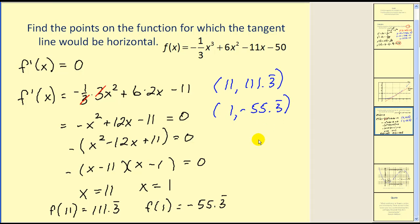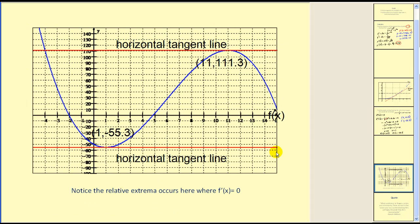Again, let's verify with a graph. In blue we have our function. In red you can see our two horizontal tangent lines. The points of tangency are the points that we found here and here. I would also like you to notice the relative extrema occur where the derivative is equal to zero. Here we have a relative minimum and here we have a relative maximum. We'll come back to this idea.